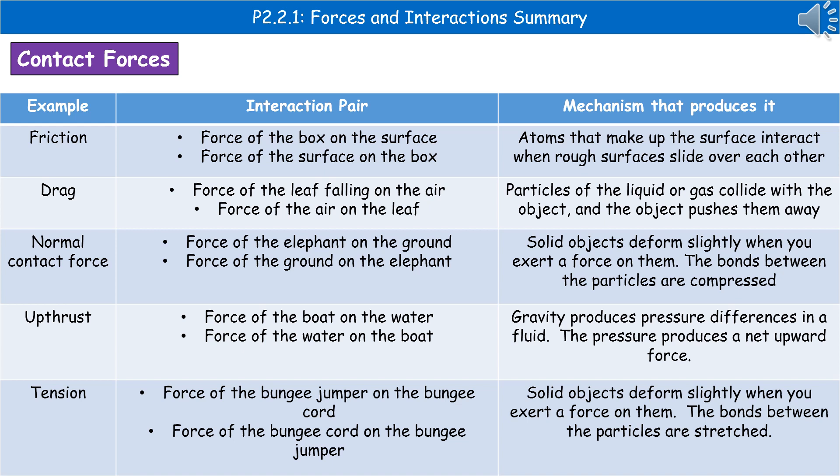Second one, drag. We could have an example of a leaf falling. So our drag would be the force of the leaf falling on the air and the force of the air on the leaf, so opposite directions again. The reason we get that is that the particles of our liquid or gas are colliding with the object and the object is pushing them away.